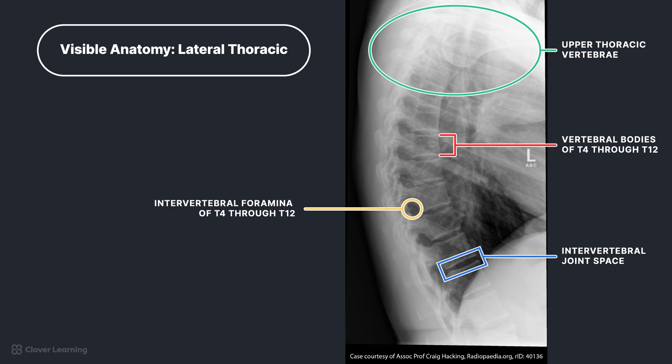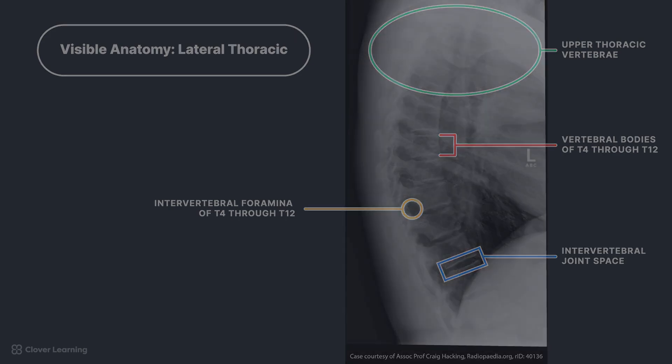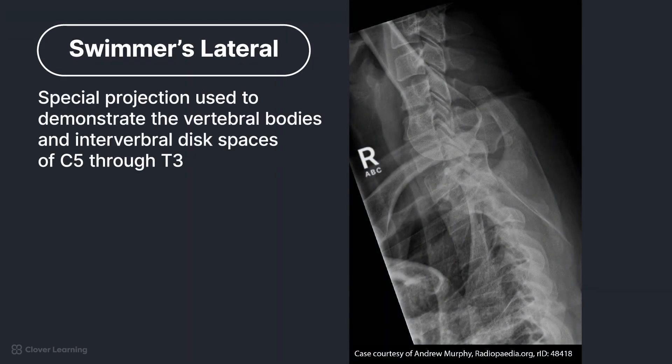Because of this, let's take a look at what a cervical thoracic swimmer's lateral projection would look like. This swimmer's lateral is a special projection used to demonstrate the vertebral bodies and intervertebral disc spaces of C5 through T3. It can be used in both cervical and thoracic radiographic series to better visualize the area.